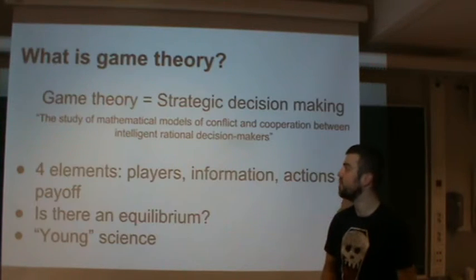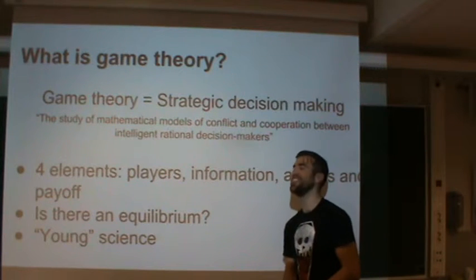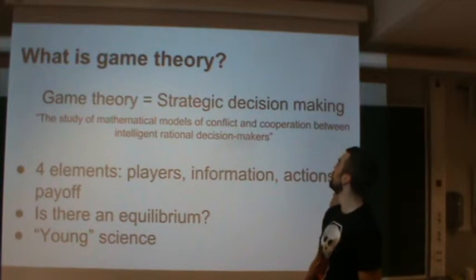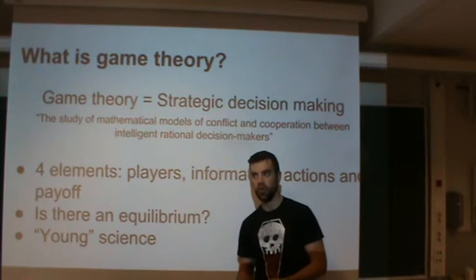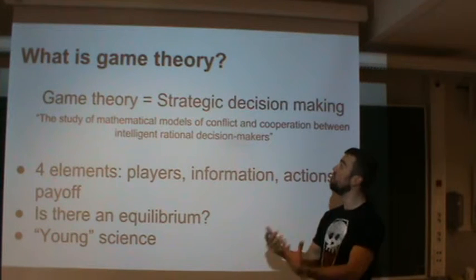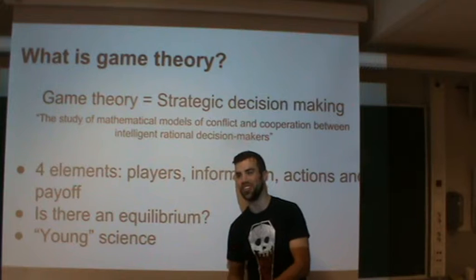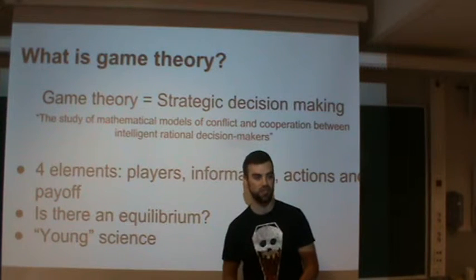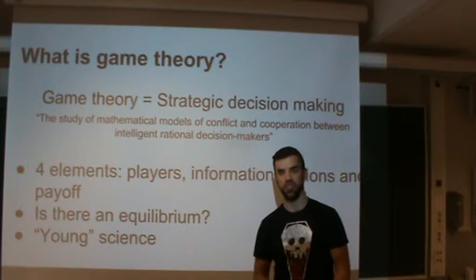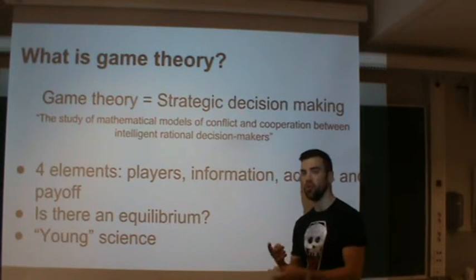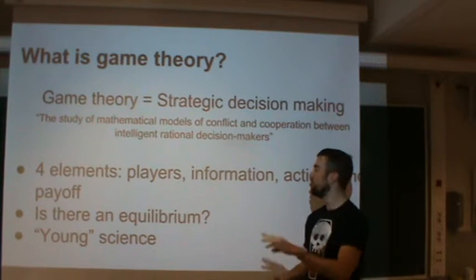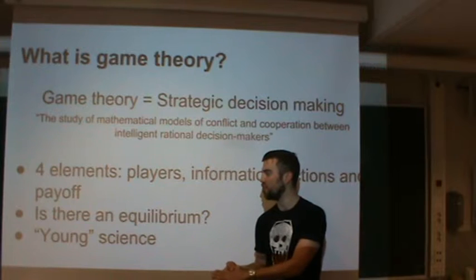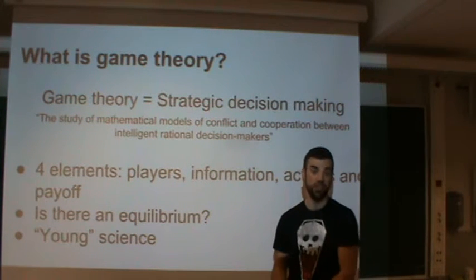What is game theory? The Wikipedia article defines it as the study of strategic decision making, or the study of mathematical models of conflict and cooperation between intelligent rational decision makers. To define a game or model in game theory, we need four elements: who are the players, what is the information in the system, what are the actions available to the players, and what are the payoffs for the different scenarios.